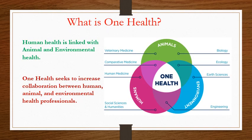What is One Health? Human health is linked with animal and environmental health. One Health seeks to increase collaboration between human, animal and environmental health professionals. As you can see in the diagram, it needs the involvement of all the people related to health, including biology, ecology, earth science, engineering related to environment and all the other medical subjects.